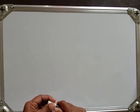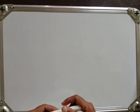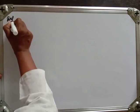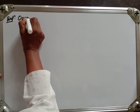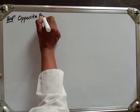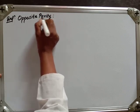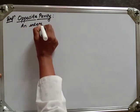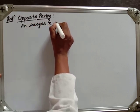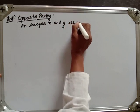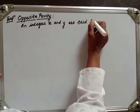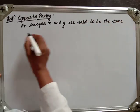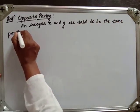Hello students, today let's continue about the Pythagorean triplet. Today let's see the definition first — definition of opposite parity.